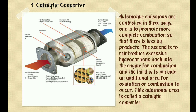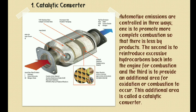The first method is the catalytic converter, which looks similar to a muffler. The aim of the catalytic converter is to chemically treat the pollutants and convert them into harmless gases — CO (carbon monoxide) to CO2, hydrocarbons (HC) to H2O, and splitting of NO to N2 and O2. Automotive emissions are controlled in three ways: promoting more complete combustion, routing excess hydrocarbons back into the engine for combustion, and providing an additional area for oxidation and combustion to occur — this additional area is called the catalytic converter.